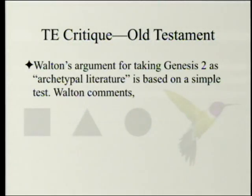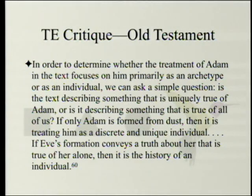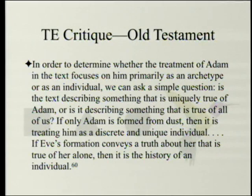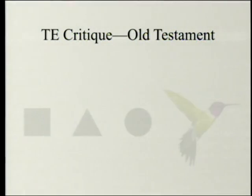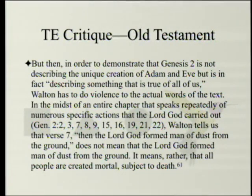Walton's argument for taking Genesis 2 as archetypal literature is based on a simple test: 'In order to determine whether the treatment of Adam focuses on him as an archetype or as an individual, we can ask: is the text describing something uniquely true of Adam, or something true of all of us?' The test says if only Adam is formed from dust then it treats him as a discrete unique individual. And only Adam is formed from dust. Similarly for Eve's formation — if it conveys a truth true of her alone, then it is history of an individual.